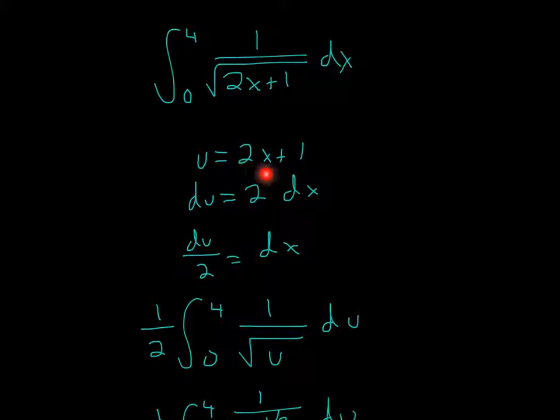I said u equals 2x plus 1, so 1 over square root of 2x plus 1 becomes 1 over square root of u. All I'm going to do is rewrite it as u here.